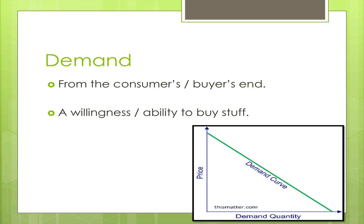That is demand, and again, this is from the potential buyer's end. You can see in the bottom right the demand curve of how the demanded quantity is related to price. The higher the price, the lower quantity is going to be demanded. The lower the price, the more quantity that would be demanded.